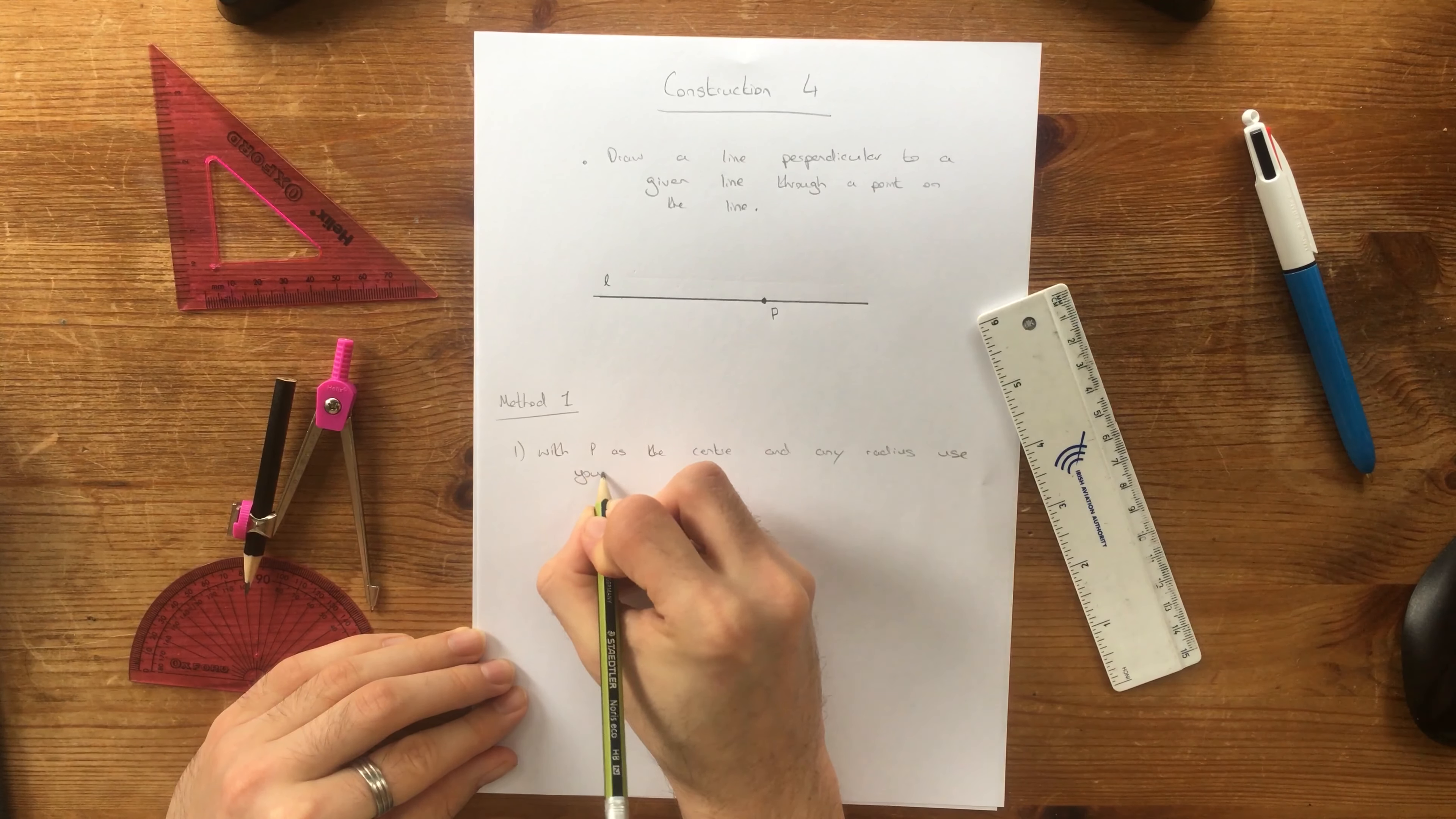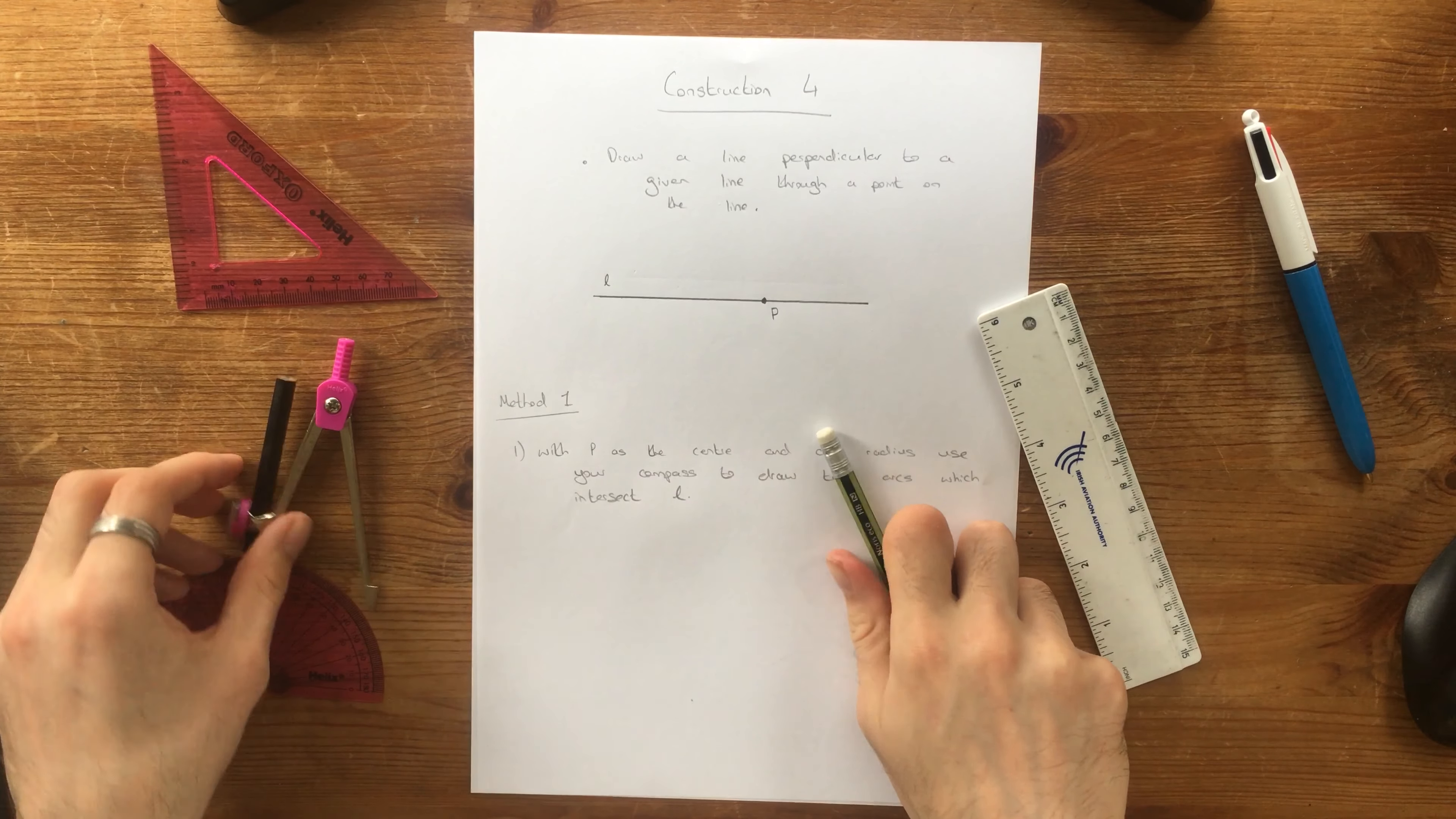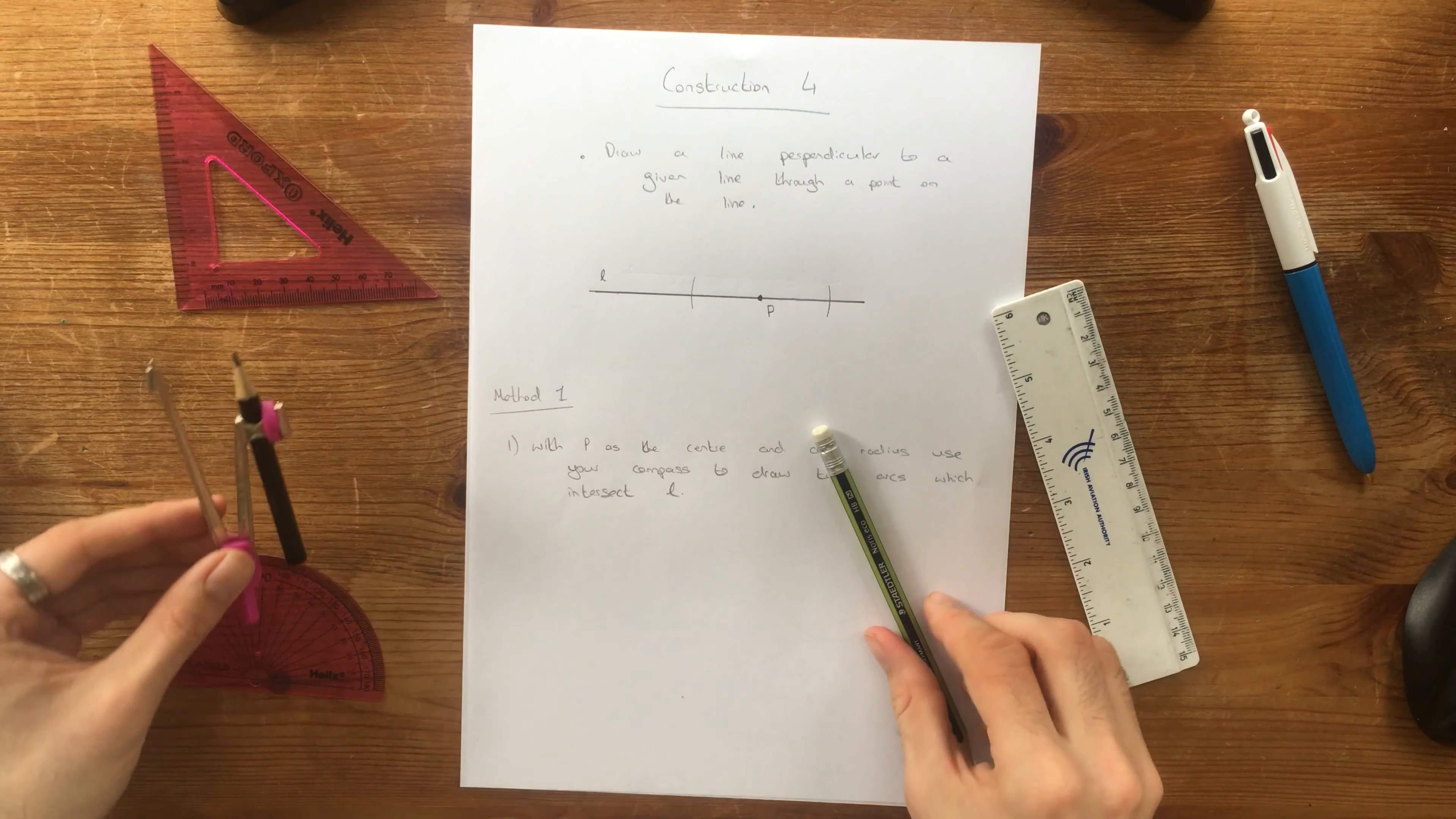Use your compass to draw two arcs which intersect L. So that is, using our compass, and the center being P, any radius, doesn't matter how big this is, and we're going to cross L once here, and once on the other side of P. So we've now got two arcs either side of P on L using a compass.